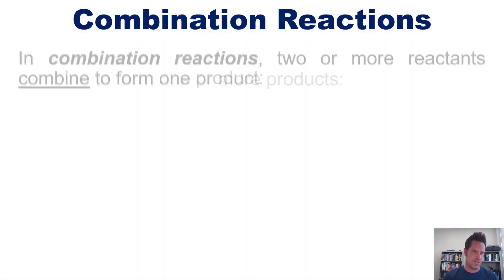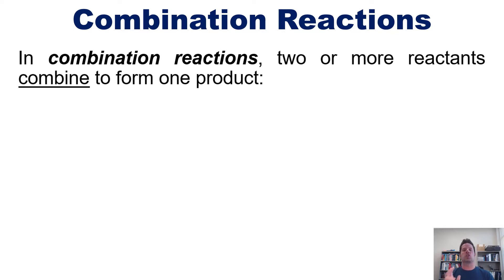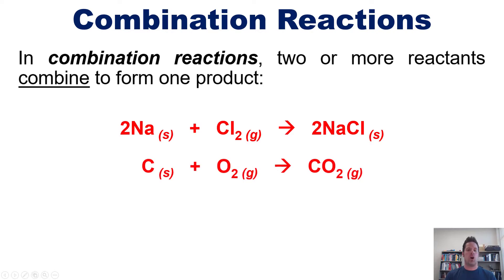The first is combination reactions. In combination reactions, two or more reactants combine to form one product. For example, sodium metal and chlorine gas combining to form sodium chloride table salt, or carbon and oxygen combining to form CO2, or magnesium oxide and water combining to form magnesium hydroxide.